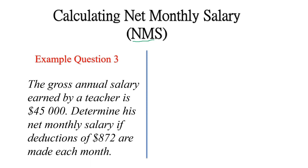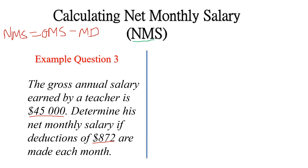The gross annual salary earned by a teacher is $45,000. Determine his net monthly salary if deductions of $872 are made each month. We want to find NMS. NMS = GMS − Monthly deductions. The question gives us the gross annual salary of $45,000 and the monthly deduction of $872, but not the gross monthly salary directly.